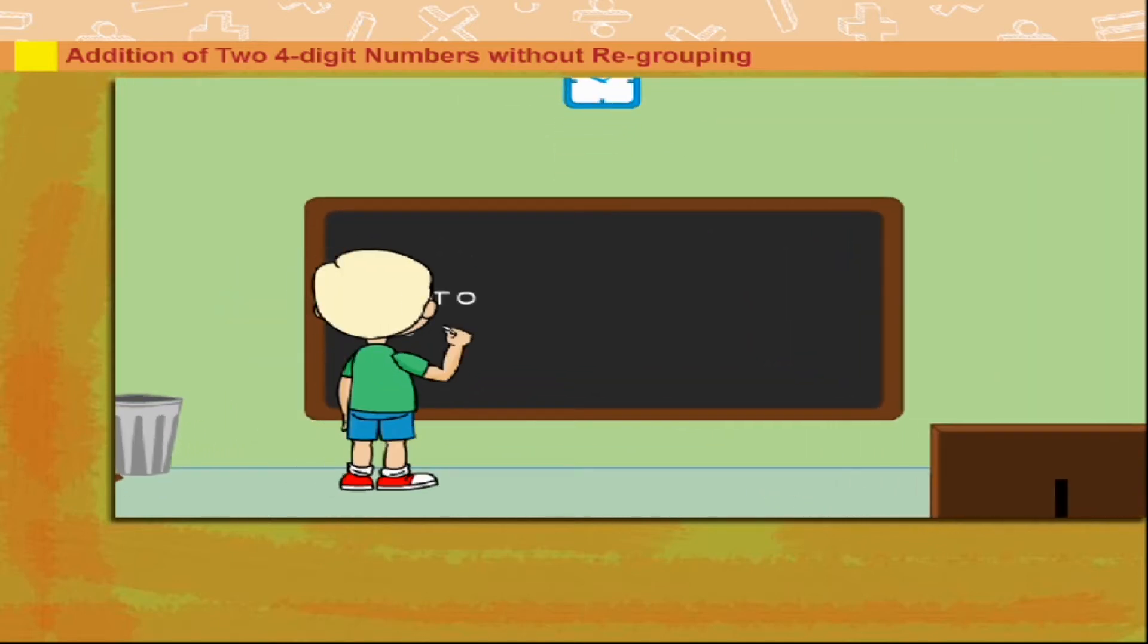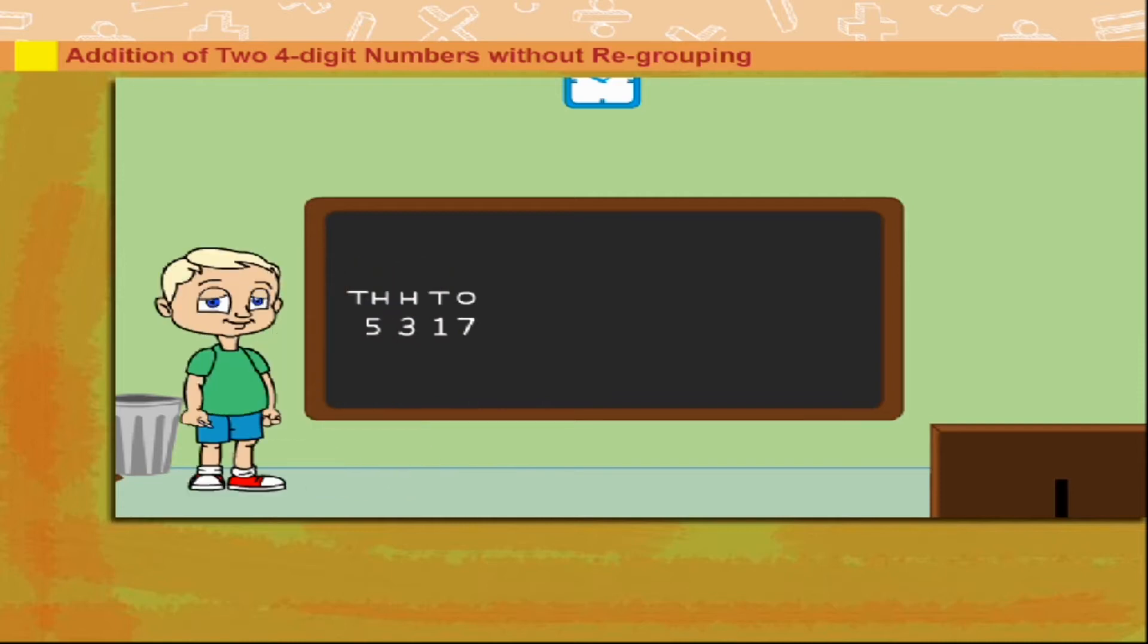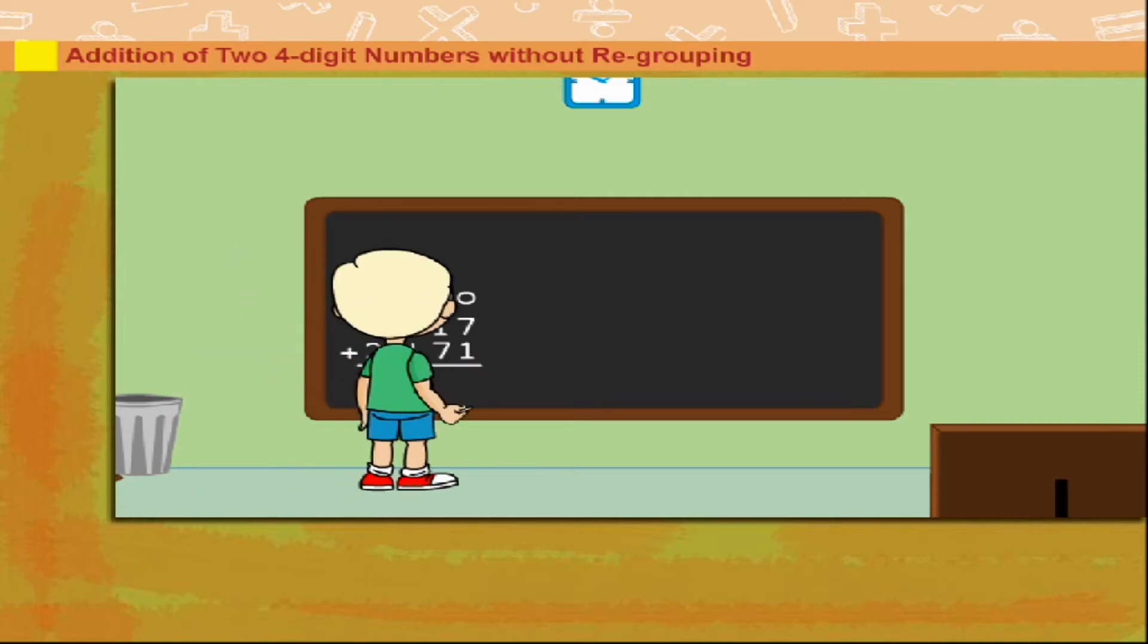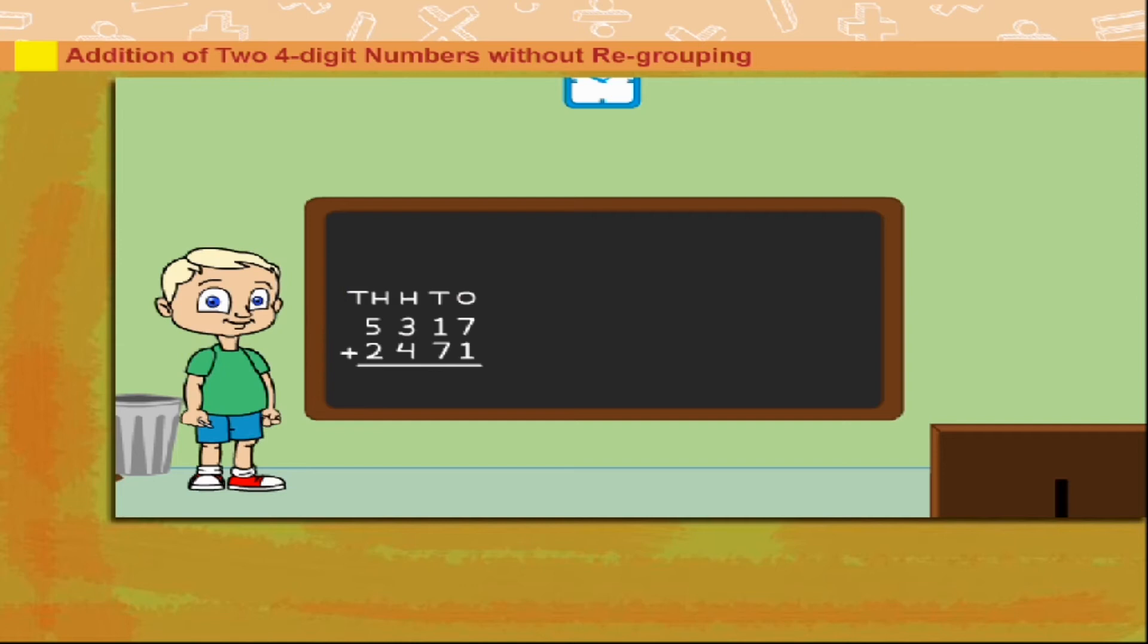Mikki now writes 5370. He writes 2471 below this for addition.